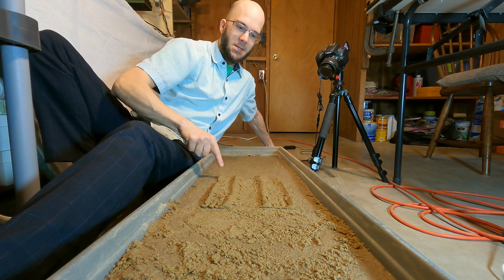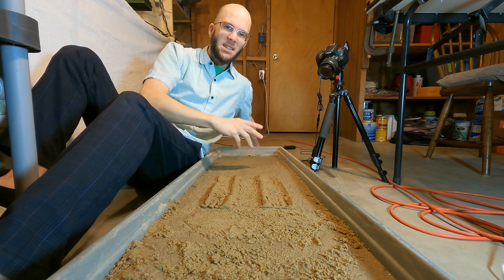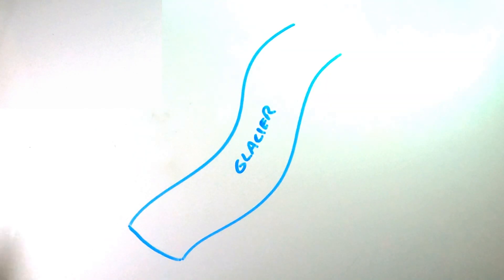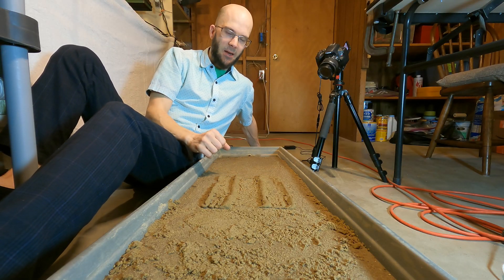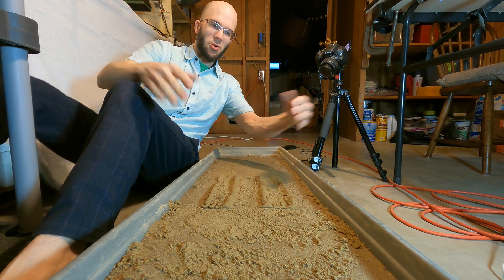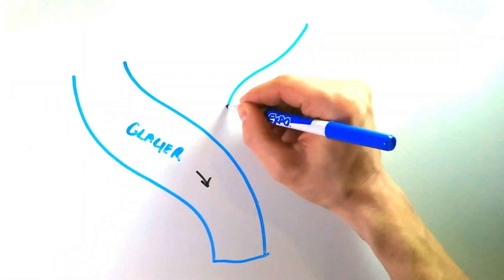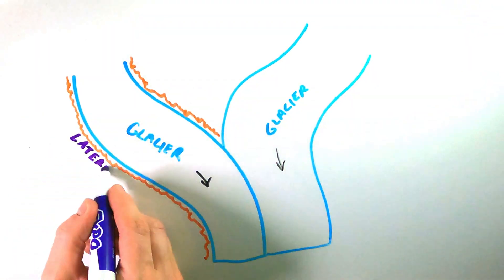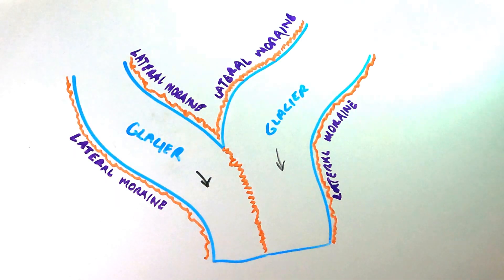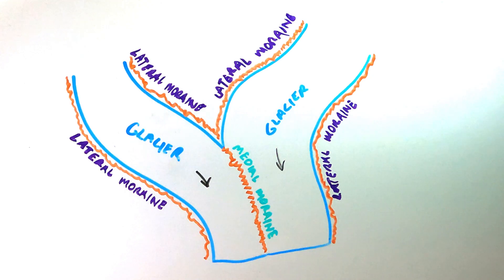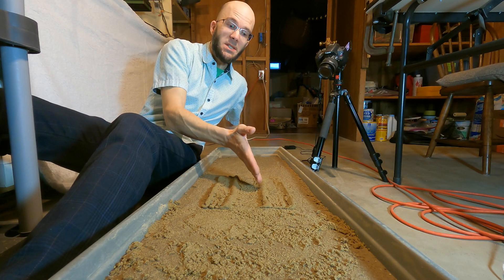As glaciers flow down mountain valleys, they act a bit like rivers — you might have a glacier flowing and then a tributary glacier will join it from the side, just like how a river has a main channel and tributaries that feed it from the side. Each of those glaciers has lateral moraines as long as they're rubbing against the edges of the valley. Where those two glaciers meet and join, those two lateral moraines join together. These streams of debris formed along the margins come together and meet at the middle of the new combined glacier — and that is what a medial moraine is. It's when two lateral moraines join together in the middle of a bigger glacier.